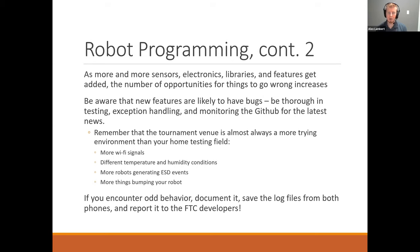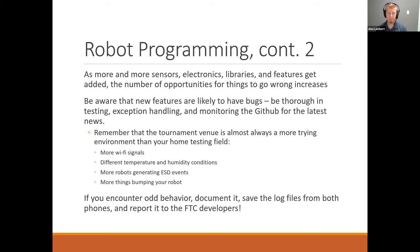As new things are added every year, there are more opportunities for bugs. For example, the Vuforia image processing technology was added recently, which gives teams a lot of power visually but comes with complicated code and potential software bugs. Although the latest features are exciting, they come hand-in-hand with potential issues since FTC is a niche application. If you find something reproducible, document the behavior, save your log files, and report it to the FTC developers on the FTC Technology Forums or as an issue on GitHub.